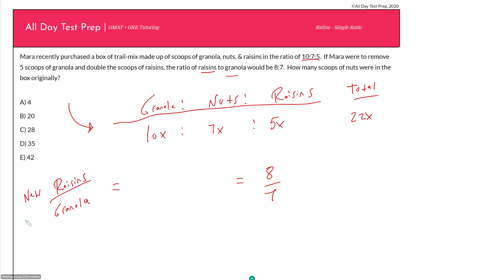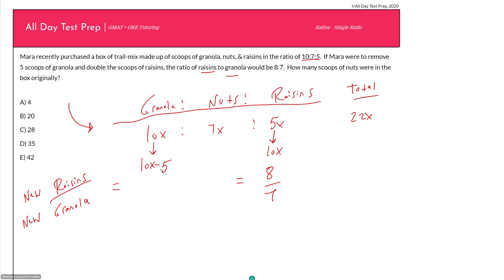It's really my new raisins to my new granola after the change occurs. We get rewarded for setting up our ratio this way. I had 10x scoops of granola before, then removed 5 scoops, so now I have 10x minus 5 scoops of granola. And if I double the scoops of raisins — I had 5x before — now I have 10x scoops of raisins. So my equation is: 10x over (10x minus 5) equals 8 over 7.